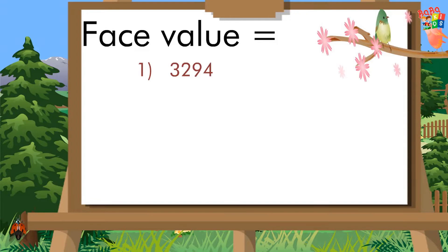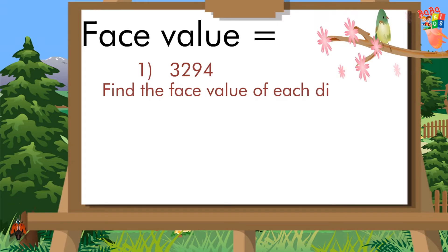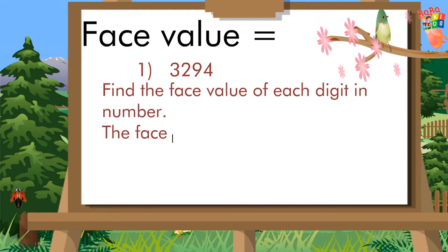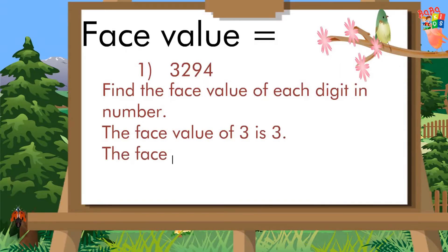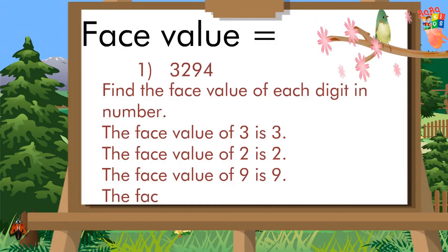Example one: 3294. Find the face value of each digit in the number. The face value of 3 is 3, the face value of 2 is 2, the face value of 9 is 9, and the face value of 4 is 4.